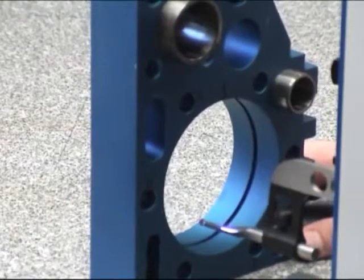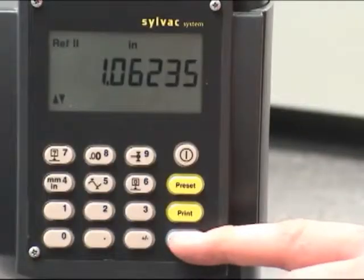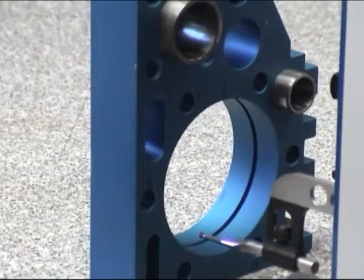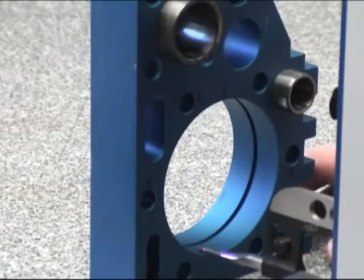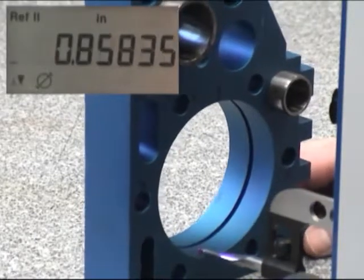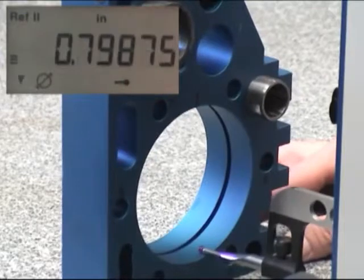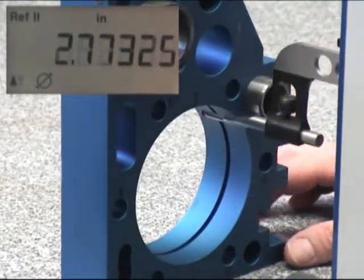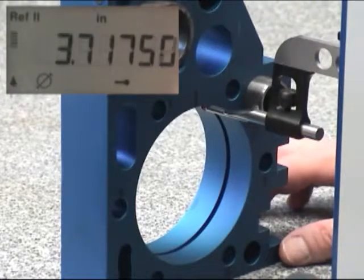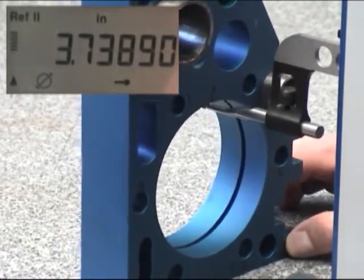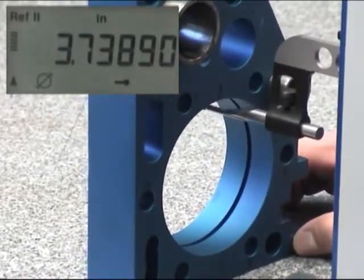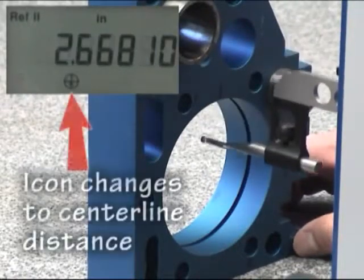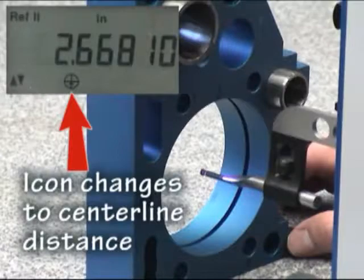Bore measuring is very simple to do on the Altea. It just requires a couple more steps. First we want to use the function button to put us in diameter mode. Now we bring the probe in near the bottom of the bore and sweep the low point. Then we simply bring the probe up, apply pressure, and sweep the high point. The diameter is locked in the display.